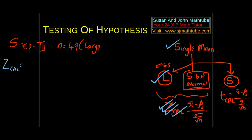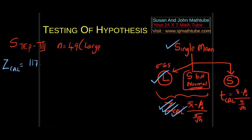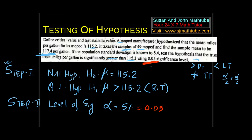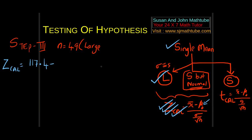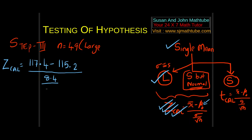Step number 3: z calculated = (x̄ − μ₀) / (σ / √n) = (117.4 − 115.2) / (8.4 / √49). Using the calculator, I got 1.833.